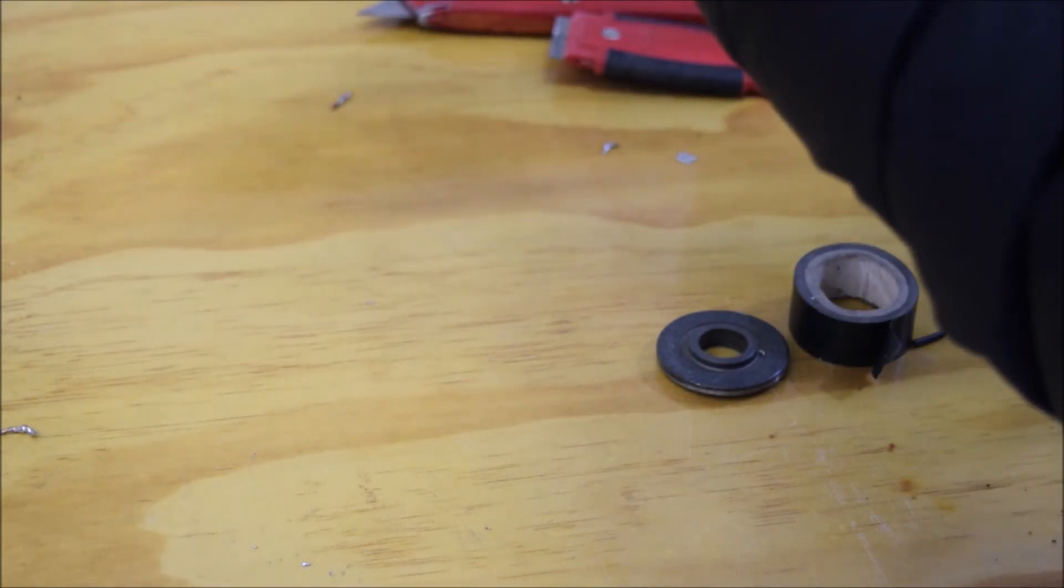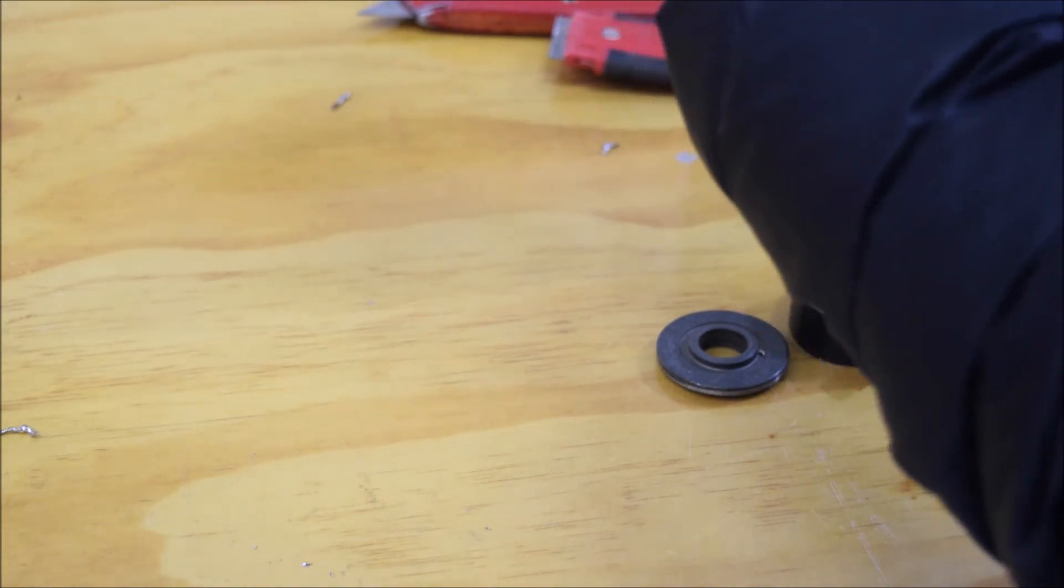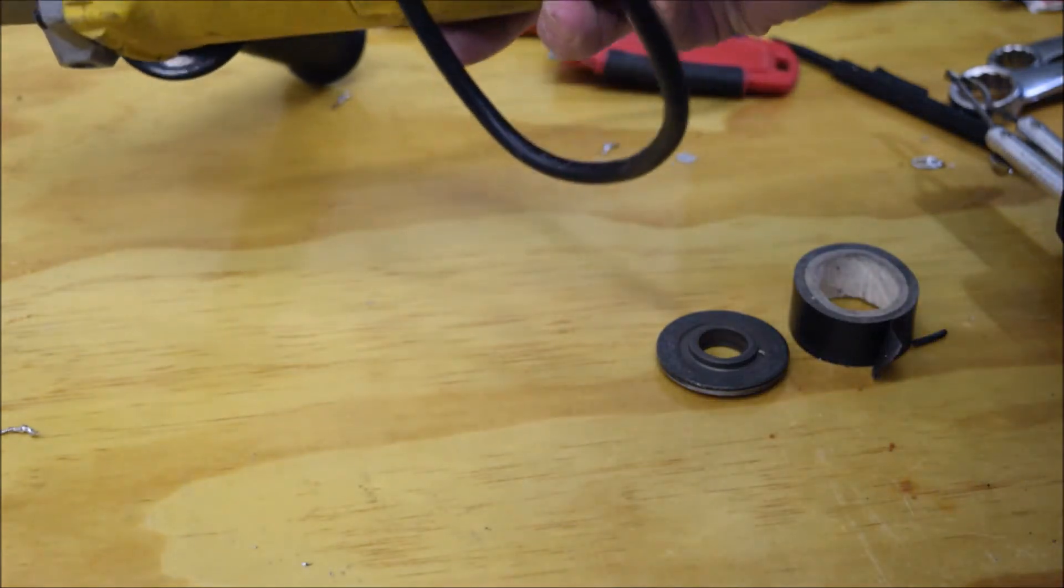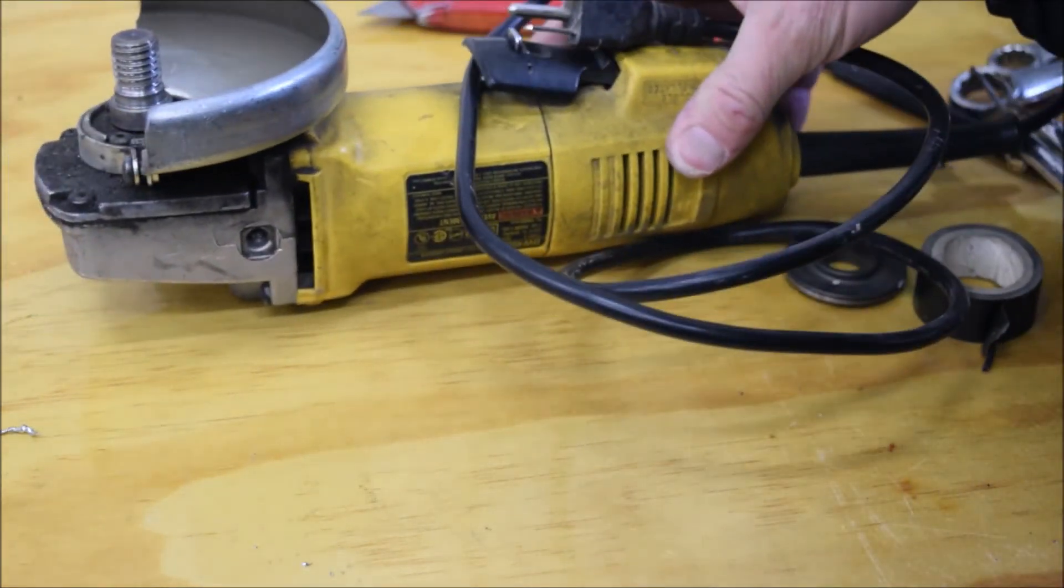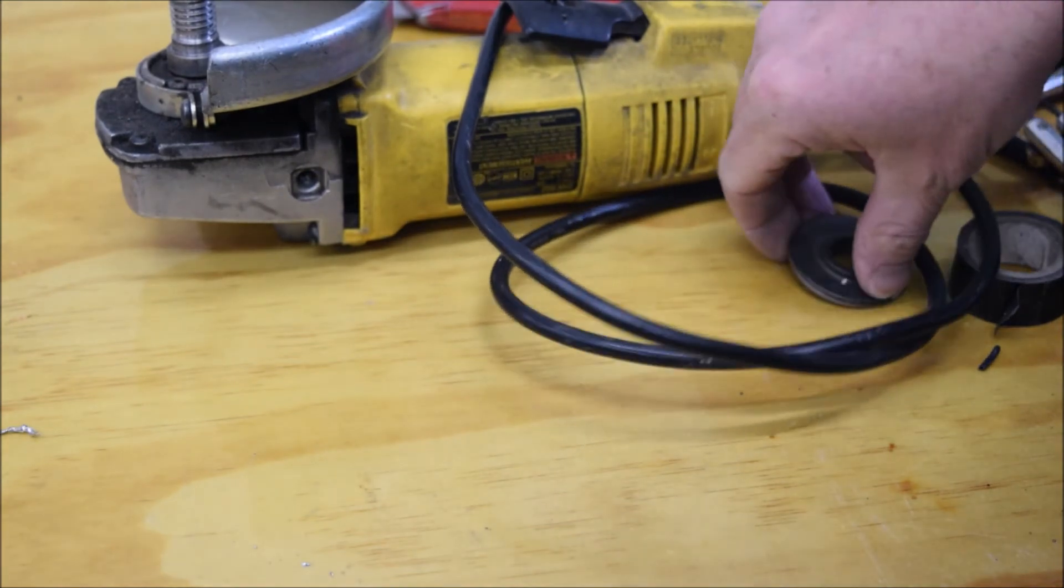That thing's locked. So I got it right, the lock works perfect. Good for another 10 years. And that's how you fix the power cord on a yellow angle grinder.